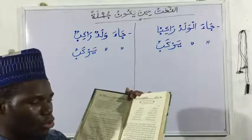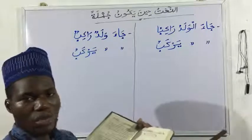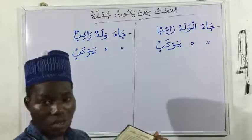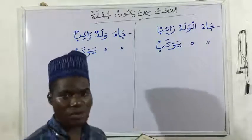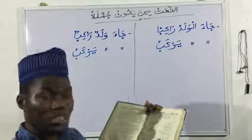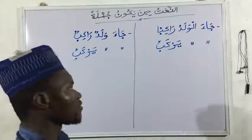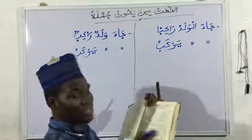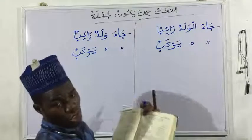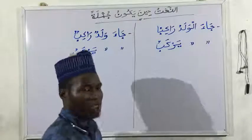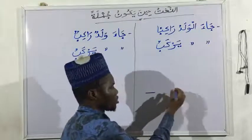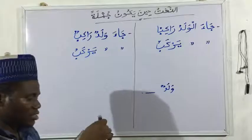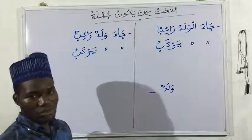Al-jumalu ba'da nakirah: when we have a sentence coming after a particular ismu that is nakira — meaning coming after any kind of indefinite noun — it will be sifatun. So if we have a sentence coming after that particular nakira ismu — let's say waladun — a jumla coming after it, that jumla will be sifatun for it. That is the first thing.